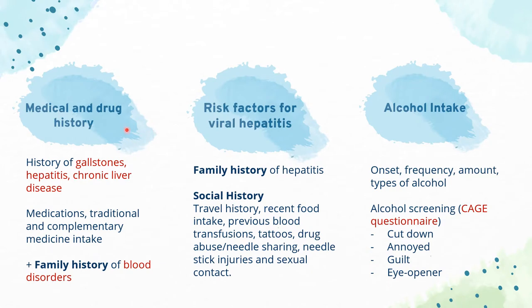In medical and drug history, it's important to elicit history of gallstones, hepatitis, and chronic liver disease. Explore their medication, including traditional and complementary medicine intake, as certain drugs might affect liver function. For family history, explore if there are any blood disorders that run in the family, as haemolytic blood diseases can cause jaundice.